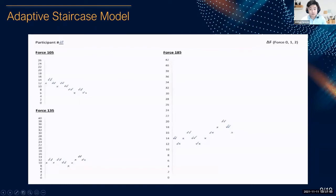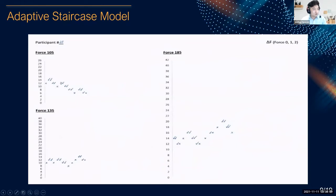The two-down one-up adaptive staircase protocol targets the 70.7 percent psychometric threshold. Participants started at a baseline level — for force: low at 105N, medium at 135N, high at 185N — beginning at 12N adjustment. If a participant got it incorrect, they moved up by 2 newtons. If they got two consecutive correct responses, they moved down a level. The experiment was terminated on three reversals.